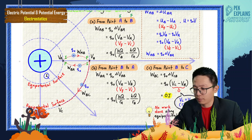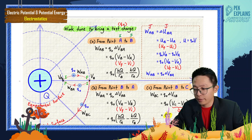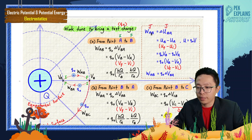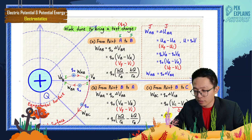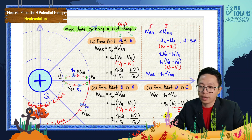You have a point charge Q and a test charge q₀. W_ab means bringing the test charge from point A — which has potential V_a — to point B — which has potential V_b. So W_ab means bringing the test charge from point A (initial) to point B (final).